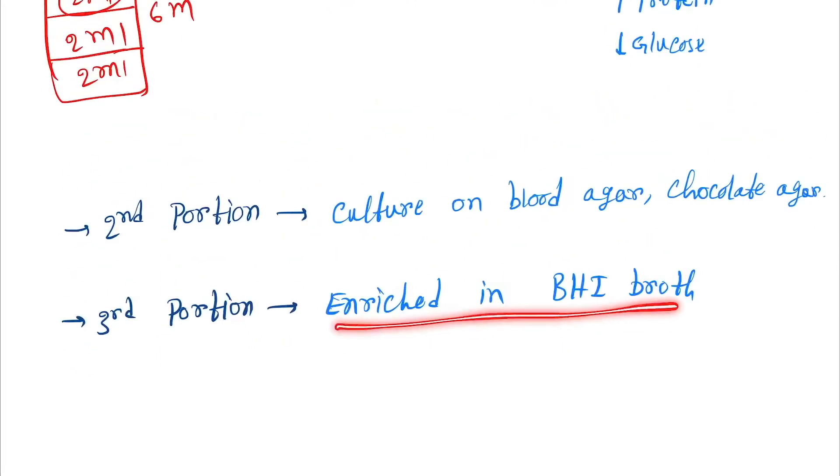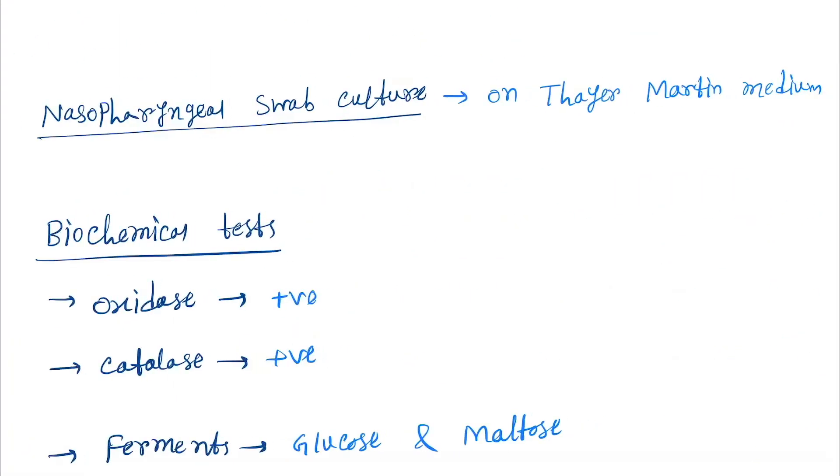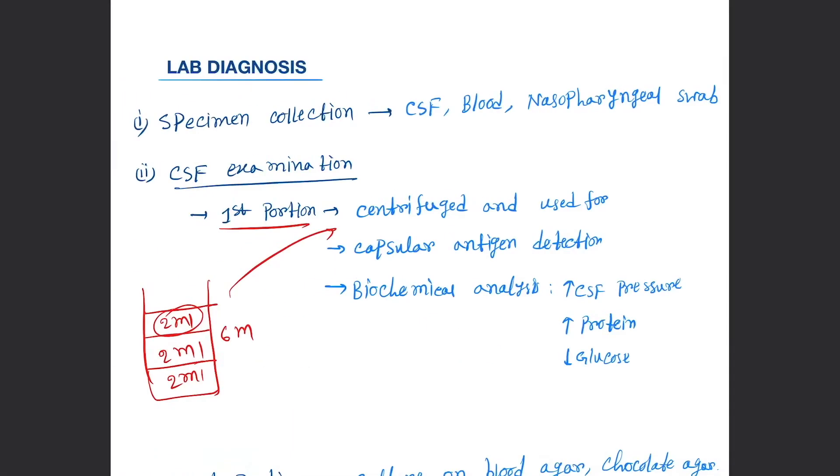Next 2 ml will be used for enriching in brain heart infusion or BHI broth. Next is nasopharyngeal swab: culture on Thayer-Martin medium.